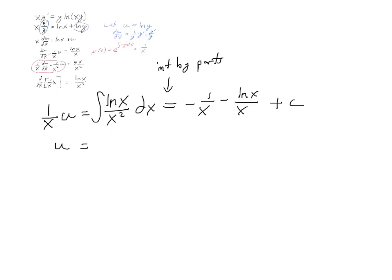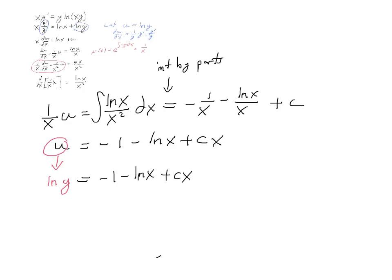So u is just going to be, multiplying through by x, negative 1 minus the natural log of x plus cx. Making the back-substitution, the natural log of y equals negative 1 minus the natural log of x plus cx. Raising both sides to the power of e, y equals e to the cx minus 1 minus the natural log of x.